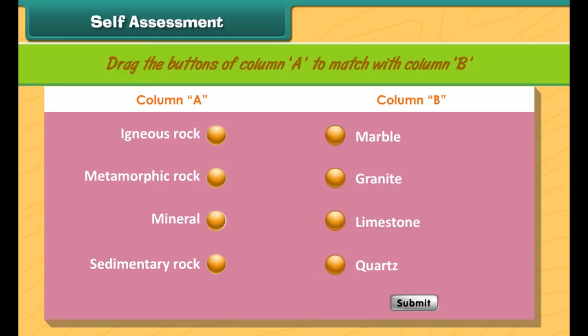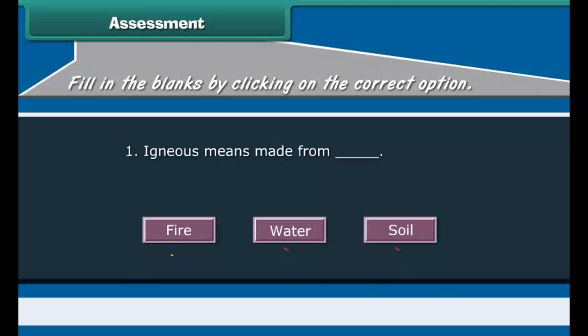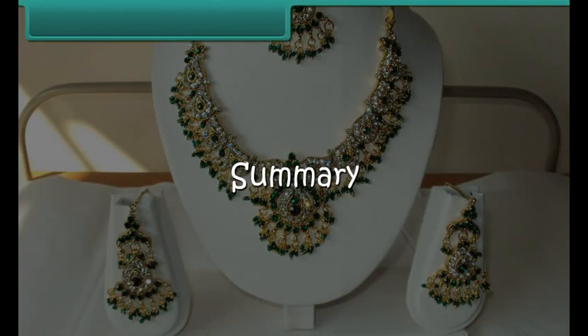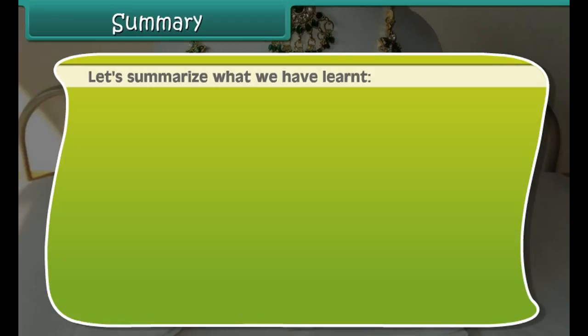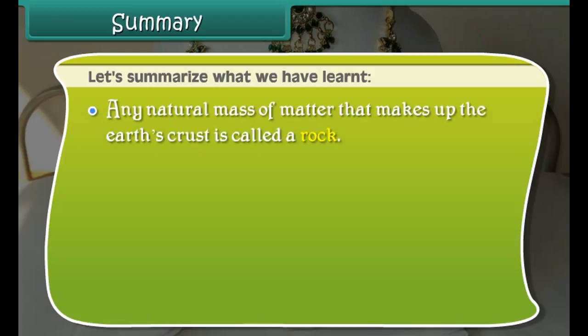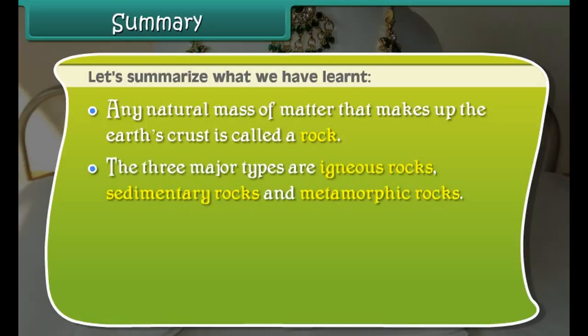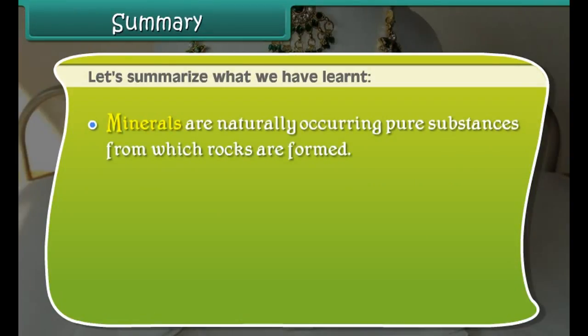Summary. Let us summarize what we have learned. Any natural mass of matter that makes up the earth's crust is called a rock. The three major types are igneous rocks, sedimentary rocks, and metamorphic rocks. Granite is an example of igneous rocks. Limestone and sandstone are the examples of sedimentary rocks, while slate and marble are the examples of metamorphic rocks.